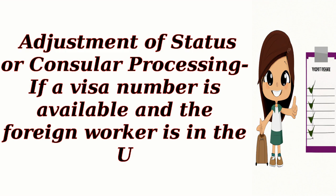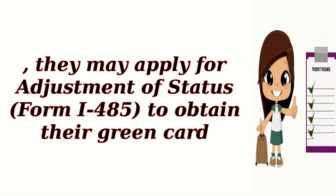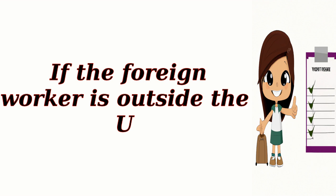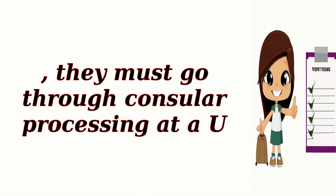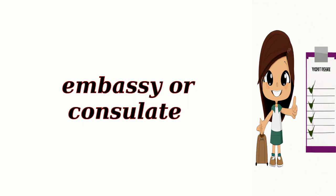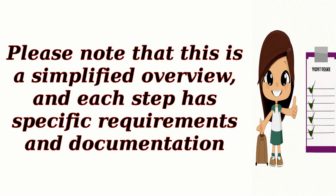Step five: Adjustment of Status or Consular Processing. If a visa number is available and the foreign worker is in the U.S., they may apply for Adjustment of Status (Form I-485) to obtain their green card. If the foreign worker is outside the U.S., they must go through consular processing at a U.S. Embassy or Consulate. Please note that this is a simplified overview, and each step has specific requirements and documentation.